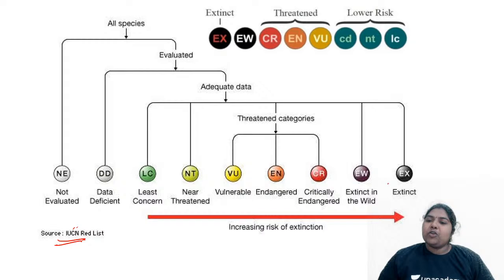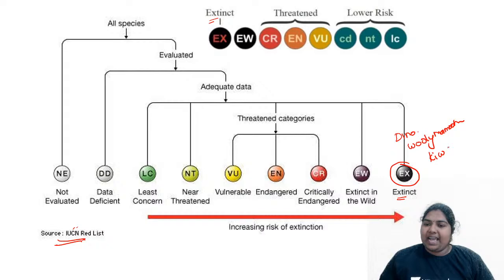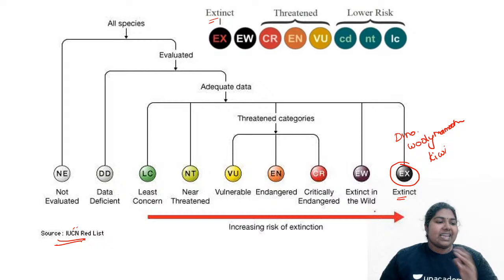The first category, marked in black as 'EX', stands for Extinct species. What about dinosaurs? What about the woolly mammoth? They are no more here. They have become extinct — they are totally gone. That is what is called as the extinct species.